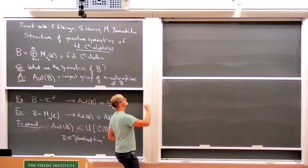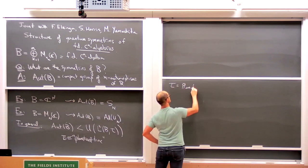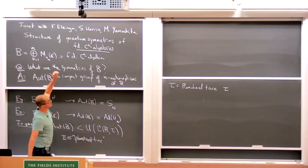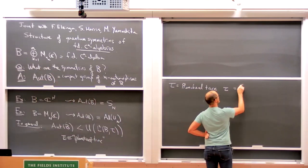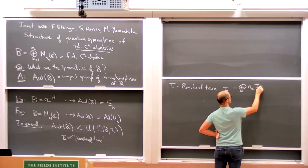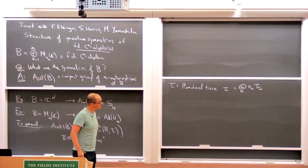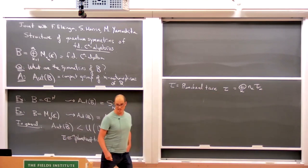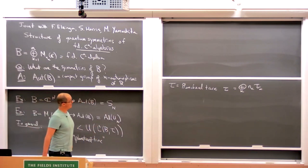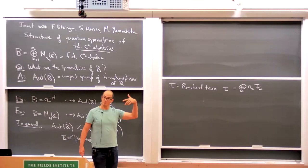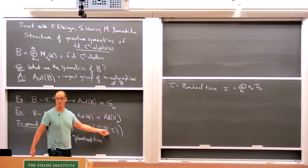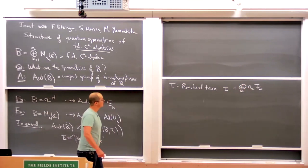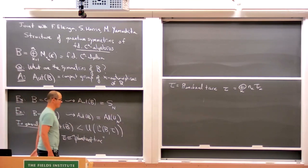The Plancherel trace tau, if I think of B as having its block decomposition, is the sum over k of n_k times the unnormalized trace on the k-th block. It's a faithful trace, and actually the unique trace up to normalization on B which arises as the restriction of the unique trace on the endomorphism algebra of the vector space B. Every automorphism will preserve this trace.